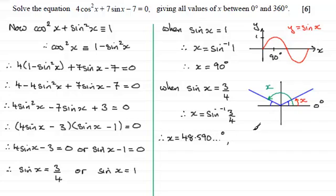So if you do 180 minus this angle, you will find you'll get 131.409 and so on degrees.